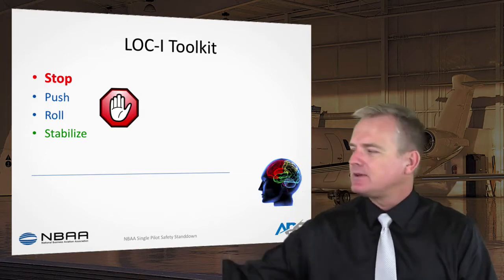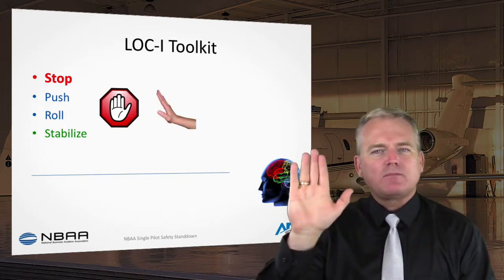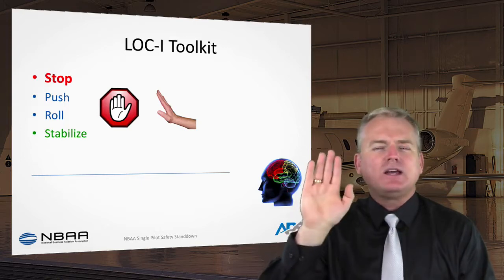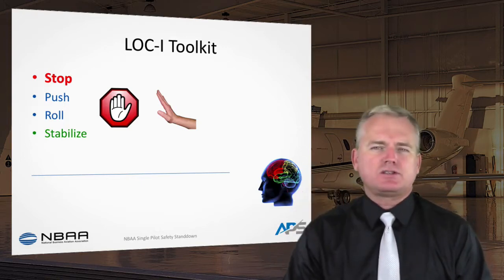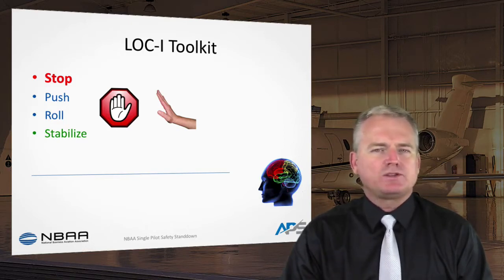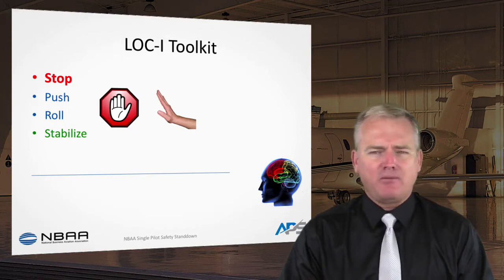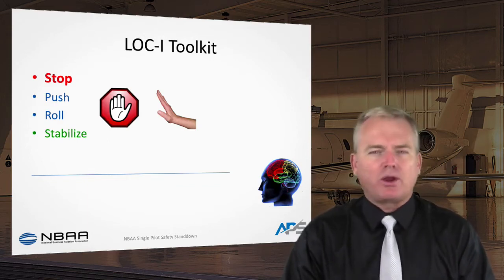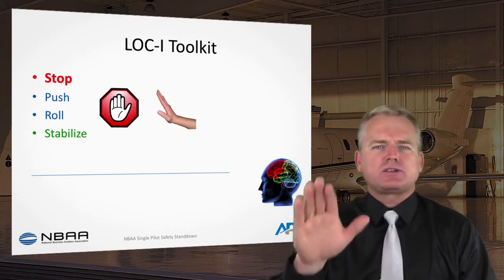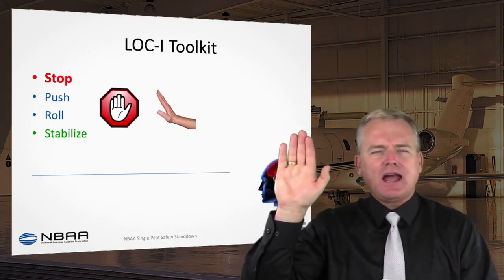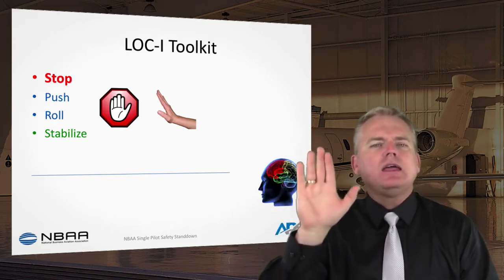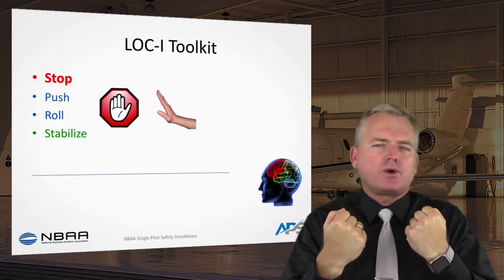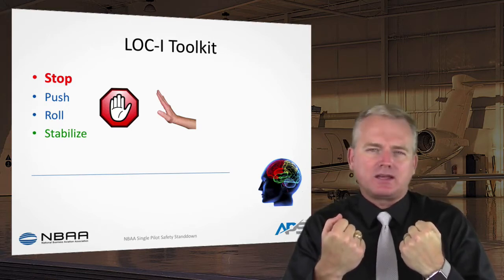The first thing is getting the stop sign up. The next step is 'Push' — the hand goes forward, reducing angle of attack. It doesn't mean we always push. AC 120-109, 109A, the ICAO manual, and UPRT resources all agree: if angle of attack is an issue or a primary consideration, it has to be addressed first. We recognize it, stop, and push. In a nose-low, unstalled dive, pulling back is appropriate to manage the dive and g-load within limits.